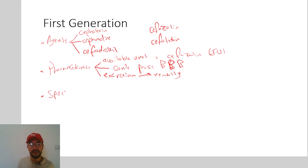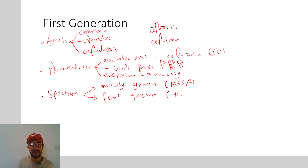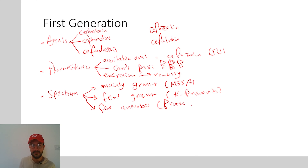Regarding the spectrum of the first generation cephalosporins, they are active against mostly gram positives — for example, methicillin-sensitive Staphylococcus aureus. They are active against a few gram negatives, for example Klebsiella pneumoniae. They are also active against a few anaerobes, for example Proteus mirabilis.